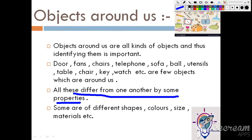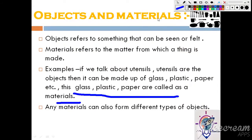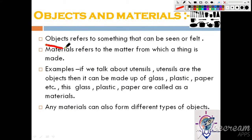Let's move to the next topic. An object refers to something that can be seen or felt. What is an object? It means such things that we can see, which we can feel and understand.